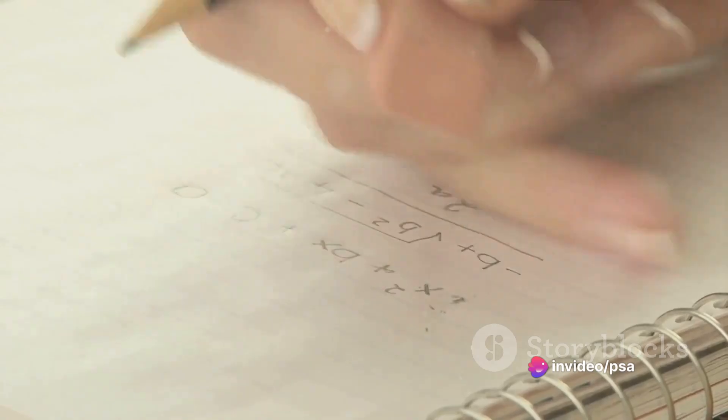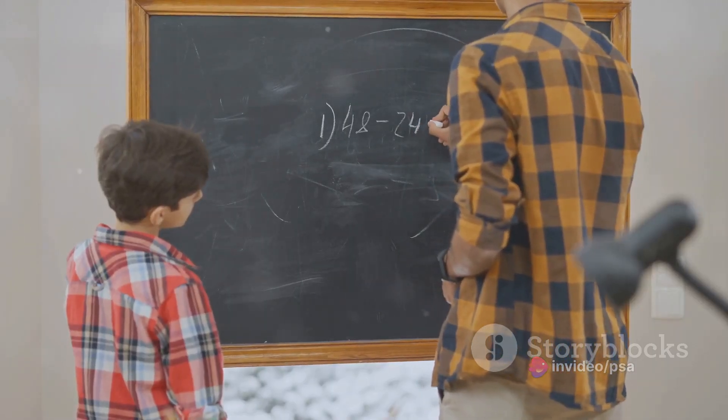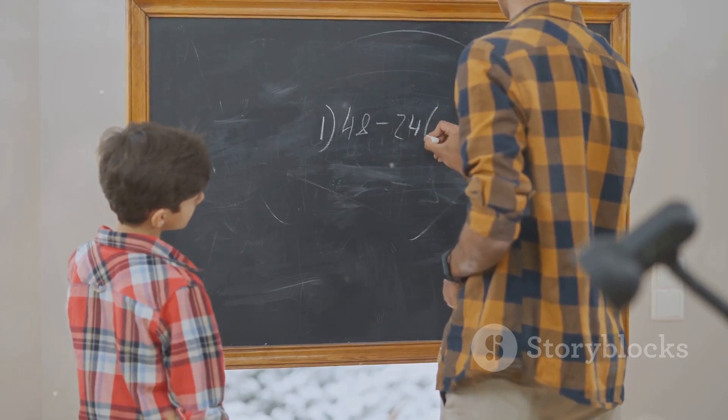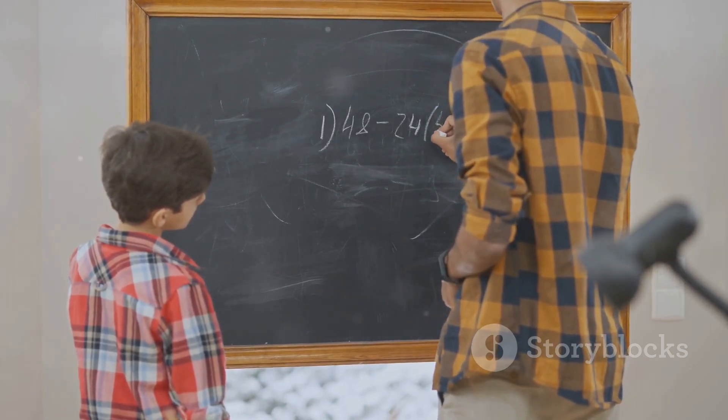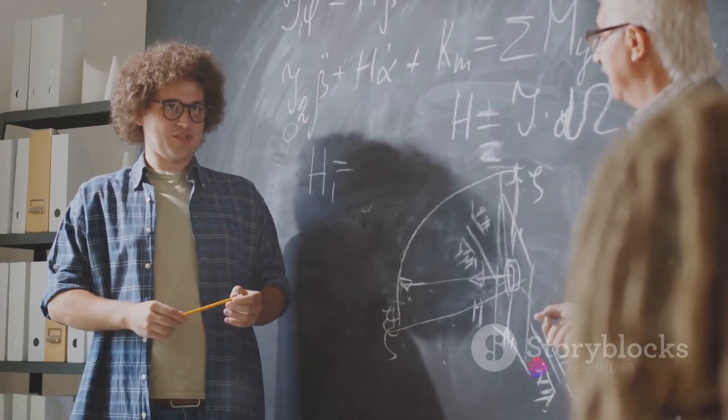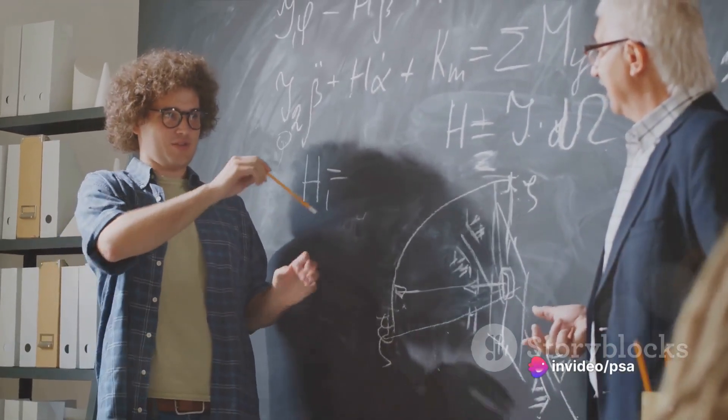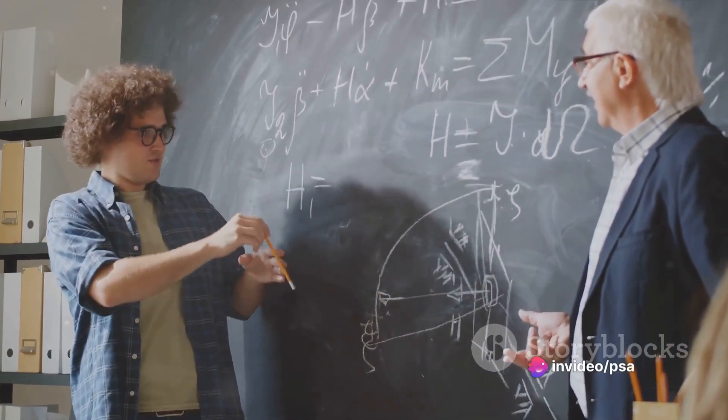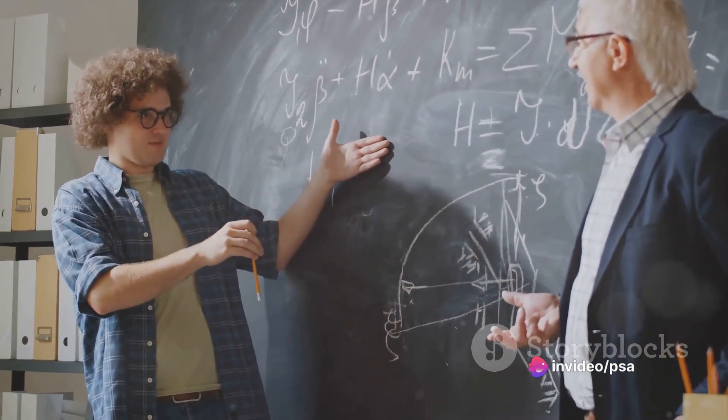Born in the late 18th century, Gauss was a child prodigy who went on to become one of the greatest mathematicians of all time. His contributions to number theory, in particular, have had a profound and lasting impact. One of these is the prime number theorem, a groundbreaking piece of work that Gauss presented when he was just a teenager.